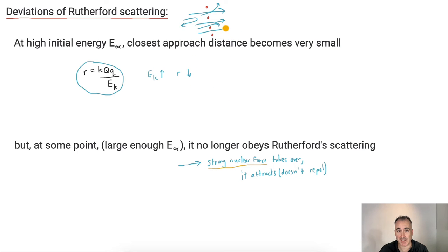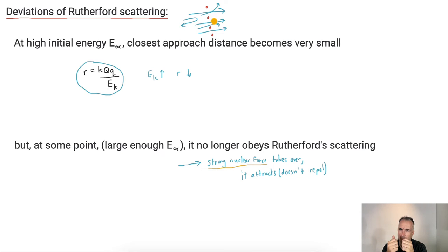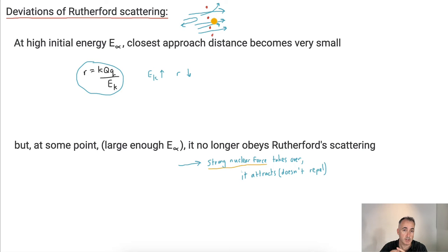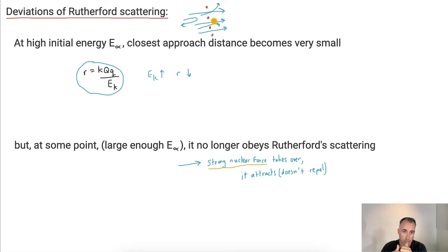These deviations in Rutherford scattering are evidence for the strong nuclear force, which attracts things instead of repelling them, and that keeps the nucleus together. If you think about it, the nucleus has protons which are all positive — shouldn't they repel each other and tear the nucleus apart? If it were only the electrostatic repulsion, yes. But the strong nuclear force is nuclear, it's very strong, it's attractive, and it's way stronger than the Coulomb repulsion.